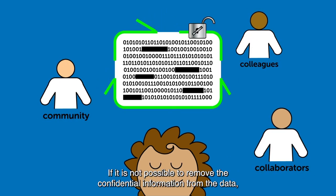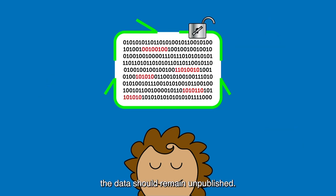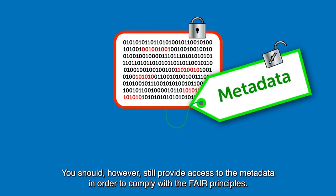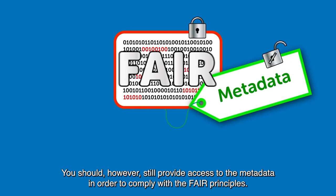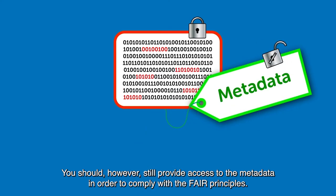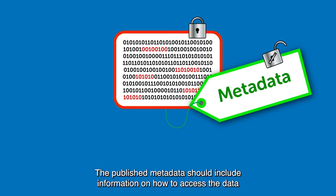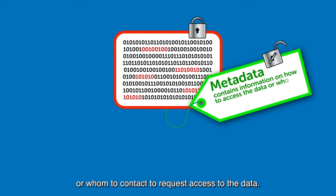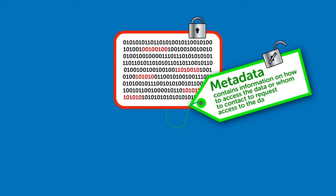If it is not possible to remove the confidential information from the data, the data should remain unpublished. You should, however, still provide access to the metadata in order to comply with the FAIR principles. The published metadata should include information on how to access the data or whom to contact to request access.